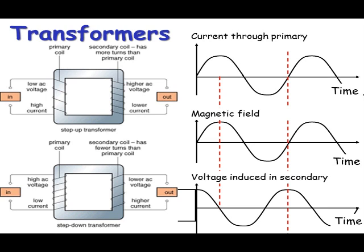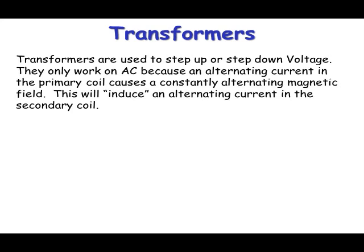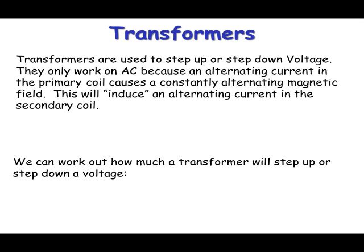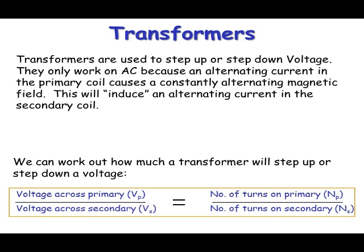Transformers are either step up or step down, so step up the voltage or step down the voltage. They only work on alternating current because an alternating current in the primary will generate a changing and alternating magnetic field to induce a current on the secondary. To work out the voltage it steps up or step down, we use a transformer equation.